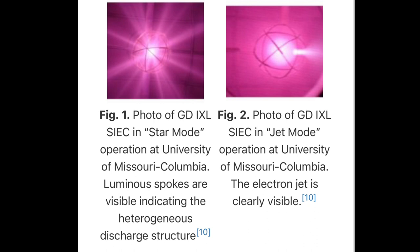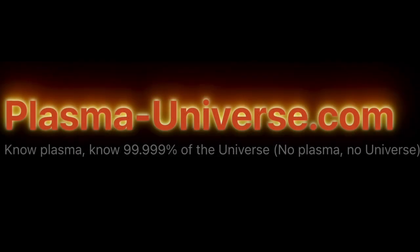Jet mode: as the pressure is increased above star mode operating regimes, the discharge is visibly more uniform with the exception of radial variance and is accompanied by an electron jet through a particular grid hole of the cathode grid. For this reason, this mode is referred to as jet mode. Despite the visual uniformity, a heterogeneous electron flow structure still exists between the anode and cathode in jet mode. For more information, please visit www.plasma-universe.com.